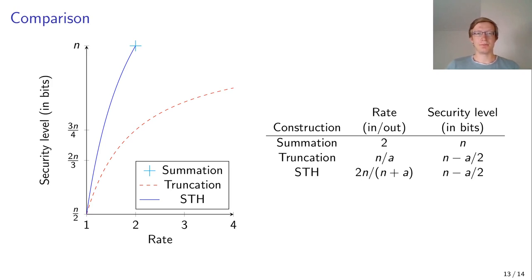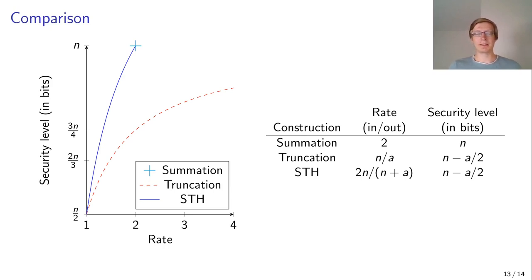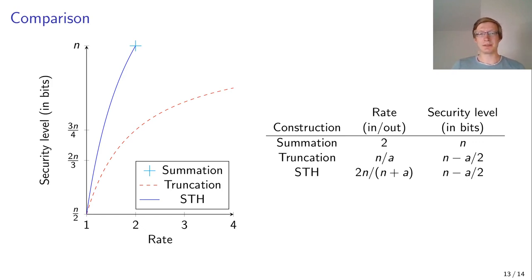For the truncation, its security varies because we have our variable A that we can choose. If we do not discard anything and just keep all the outputs, we are in the bottom left, which is just normal PRP-PRF conversion — birthday bound security with rate 1, which is very efficient. And if we discard more and more bits, our security level increases but our efficiency decreases. So theoretically it will get arbitrarily close to the full n-bit security, but it takes a long time and is not that efficient.